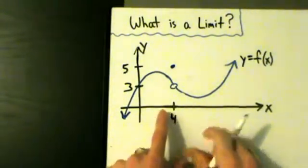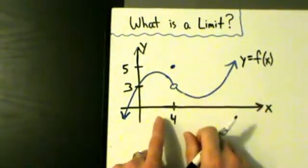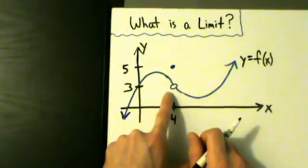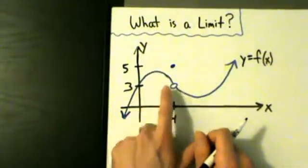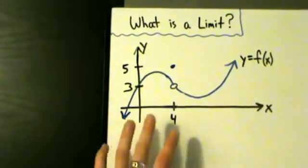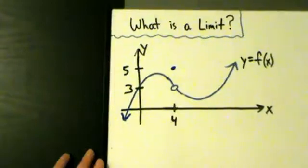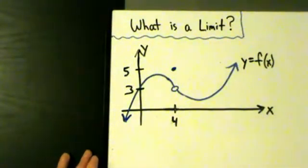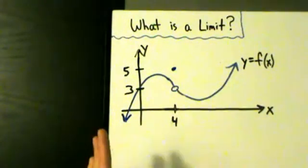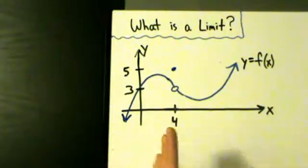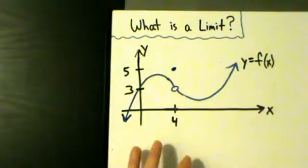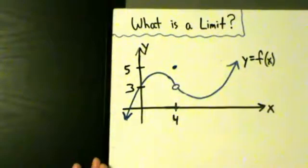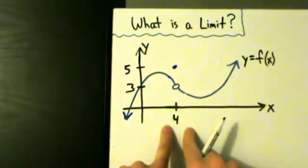So we've got this function y equals f of x, and notice at the point (4, 3) we have a hole — there's a little piece missing. When x equals 4, y is actually 5 and not 3. But as we're about to see, that doesn't matter for the limit. Informally speaking, a limit just tells you what happens to a function near a certain value of x, and not necessarily at that value. So whatever is happening at the value is irrelevant — what's important is what happens near or around that value. Let's take a look at what happens near x equals 4.